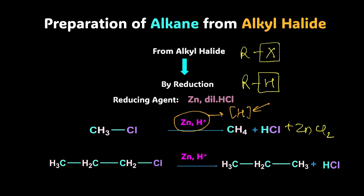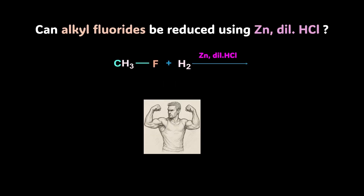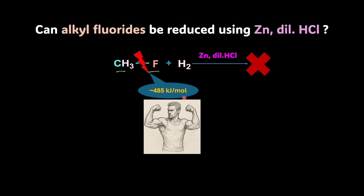Now if I take propyl chloride in the presence of zinc and dilute hydrochloric acid, again what we get is the reduced product — removal of chlorine replaced by hydrogen giving us propane. Now, what if we replace this chlorine with fluorine? If we add zinc and dilute hydrochloric acid, it turns out the C-F bond is very very strong. The bond dissociation enthalpy of the carbon-fluorine bond is 485 kilojoule per mole approximately, which is quite high. So if you are taking alkyl fluorides, you will not end up getting the alkanes that you desired.